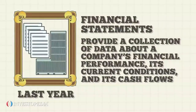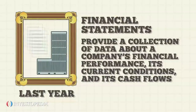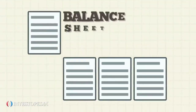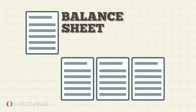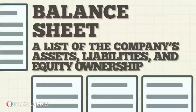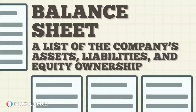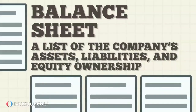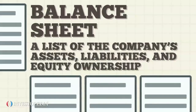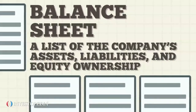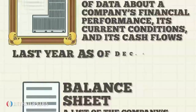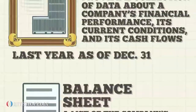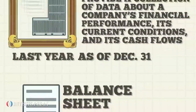There are four sections to a company's package of financial statements. The balance sheet is usually presented first. This is a list of the company's assets, liabilities, and equity ownership. The account balances are as of the date listed on the financial statement.